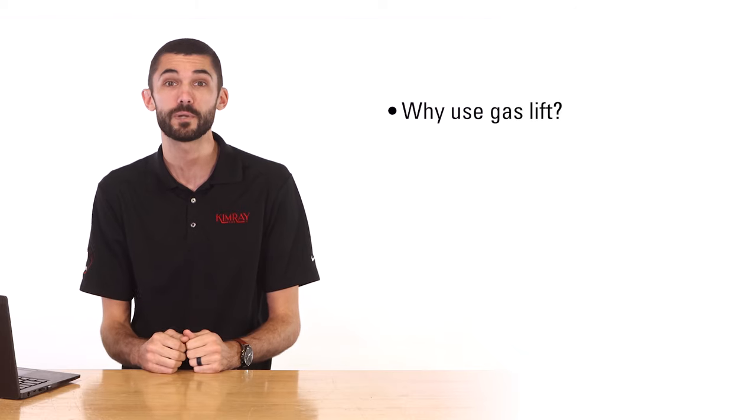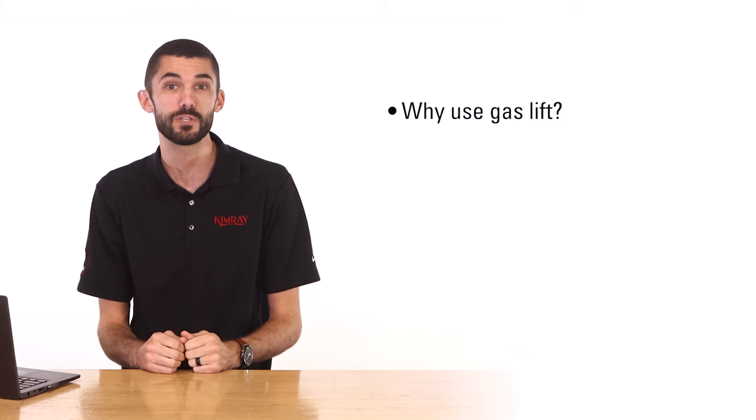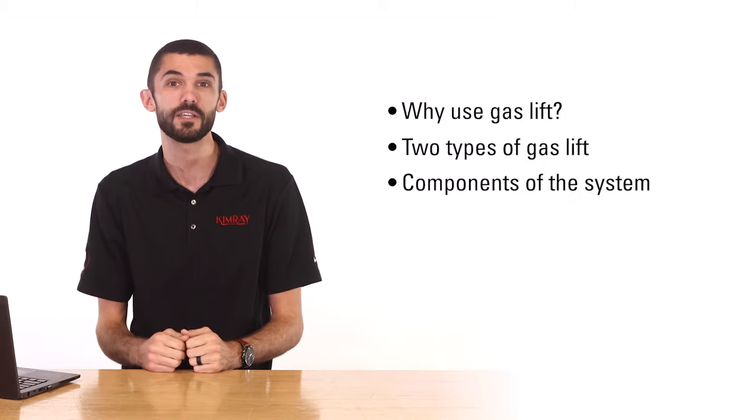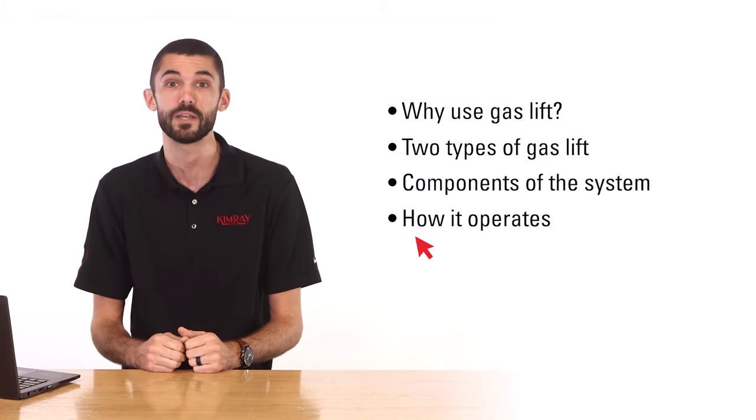Gas lift is an artificial lift system where gas is injected into a produced well's casing to help lift liquids to the surface through the production tubing. In this video we'll explain why producers may choose to use gas lift, identify two types of gas lift, highlight the components of the system, and explain how it operates.